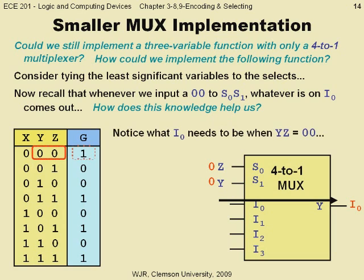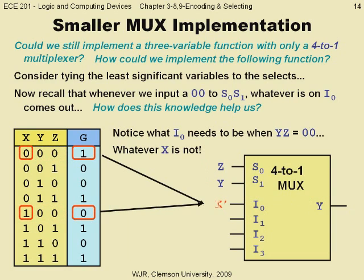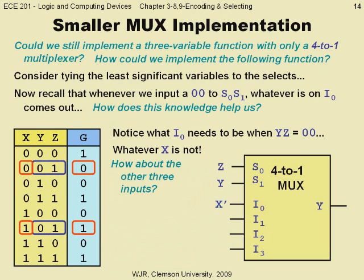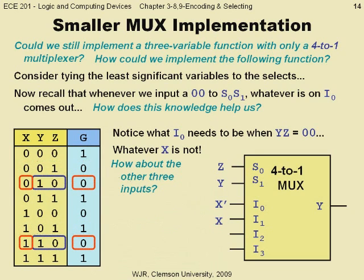For example, when y and z are both 0, we know that we need to output a 1 if x is 0, and a 0 if x is 1. Therefore, we simply let i0 be x-complement, so that the mux will output the complement of x when y and z are both 0. For y,z equal to 0,1, the output should be whatever x is, so we put an x on i1. For y,z equal to 1,0, the output should be 0 no matter what x is, so we put a 0 on i2.